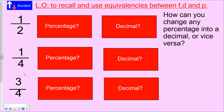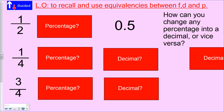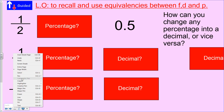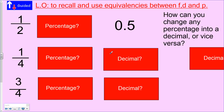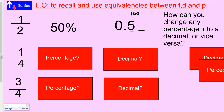One half as a decimal is 0.5. To work out what that is as a percentage, we need to look at two decimal places, because percent means out of 100 and 100 has two zeros. So what number do we put here? I hope you're all shouting at the screen telling me it's a zero placeholder — so it must be 50 percent.